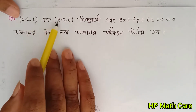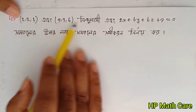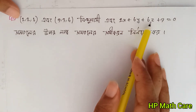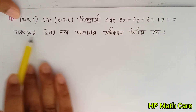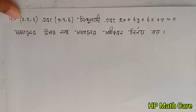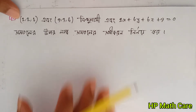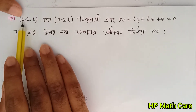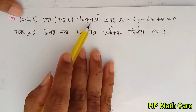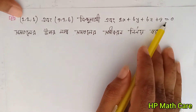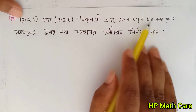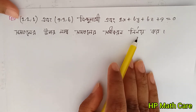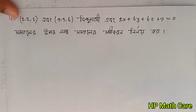2, 2, 1, then 9, 3, 6. The equation 2x plus 6y plus 6z plus 9 is equal to 0. Three-dimensional elements are very important, so you can see that 2x plus 6y plus 6z plus 9 is equal to 0.